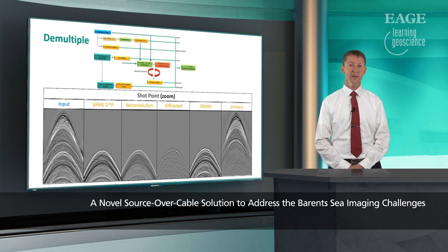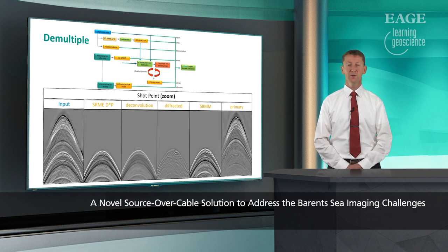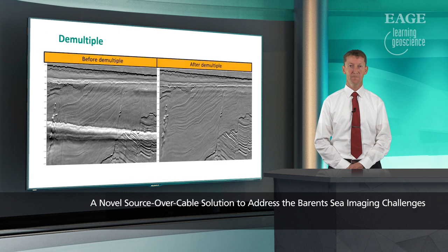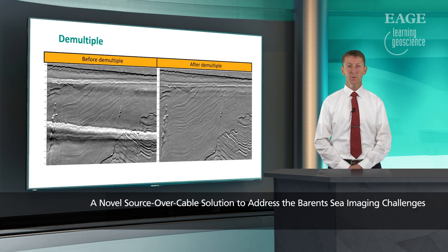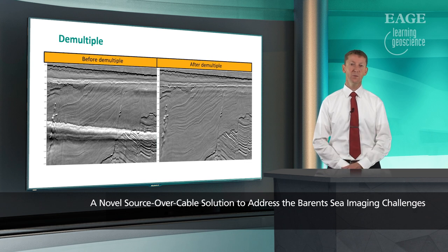Here are the same data shown as shot gathers — you can see the input data, the various multiple models, and the primary model which is quite similar to the input data but has no multiples. Here is a migrated example showing before and after the demultiple, and because the sampling is now very high, we are able to remove these multiples without leaving as much noise as we are used to in the Barents Sea.